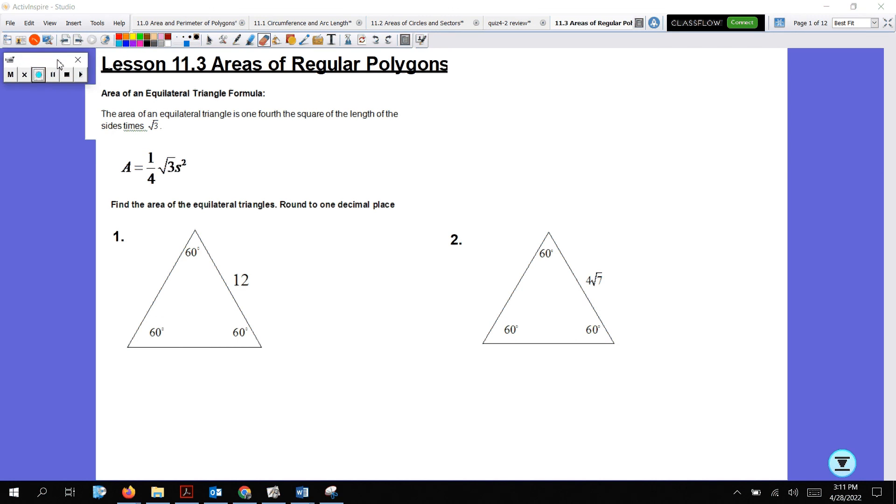Okay, here is lesson 11.3, area of regular polygon. This formula here is for the area of an equilateral triangle.